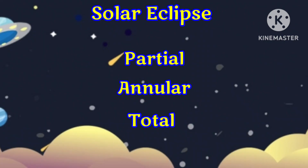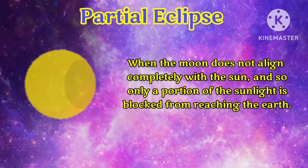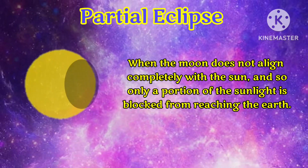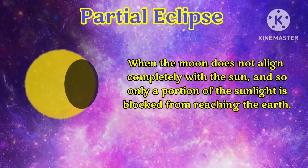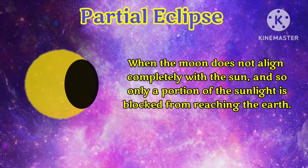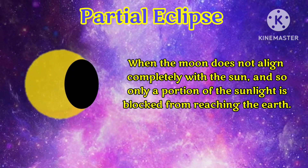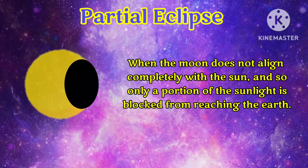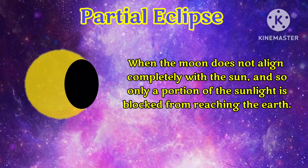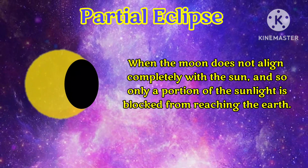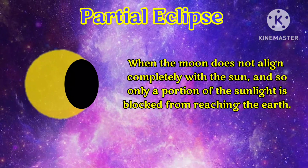Solar eclipse can be categorized as partial, annular, and total. When the moon does not align completely with the sun, and so only a portion of the sunlight is blocked from reaching the earth, it is called a partial eclipse.